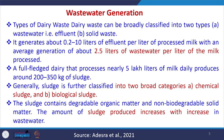Wastewater generation from dairy waste can be broadly classified into two types: effluent and solid waste. The industry generates 0.2 to 10 liters of effluent per liter of processed milk depending upon the technology used, with an average generation of 2.5 liters of wastewater per liter of milk processed. That means if we are processing 1000 liters of milk, 2500 liters of wastewater will be generated.